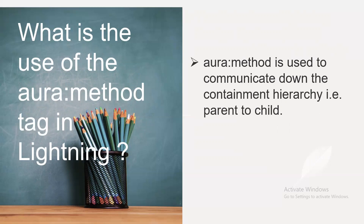What is the use of the aura:method tag in Lightning? The aura:method is used to communicate down the containment hierarchy, that is, from parent to child.